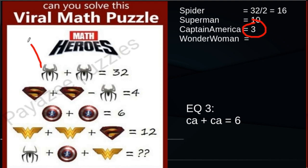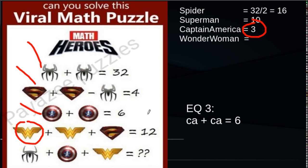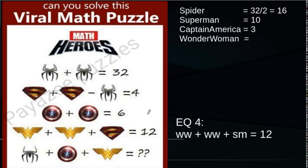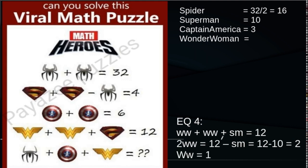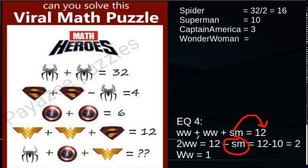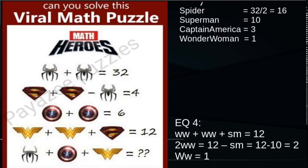We now have Spider-Man, Superman, and Captain America. The one thing left is Wonder Woman. In equation 4, two Wonder Women plus Superman equals 12. So 2 Wonder Woman equals 12 minus Superman. Putting in Superman's value of 10: 12 minus 10 equals 2, so Wonder Woman equals 1.